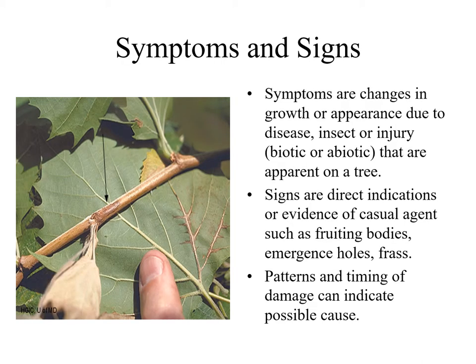When diagnosing a tree problem it is good to know the difference between symptoms and signs. Symptoms are changes in growth or appearance due to disease, insect, or injury — whether biotic or abiotic — that are apparent on a tree. Signs are direct indications or evidence of the causal agent such as fruiting bodies, emergent holes, and frass.